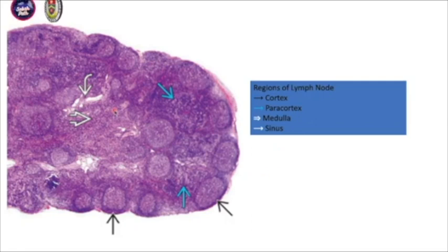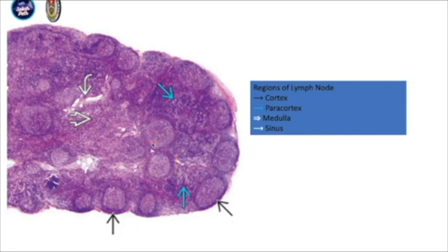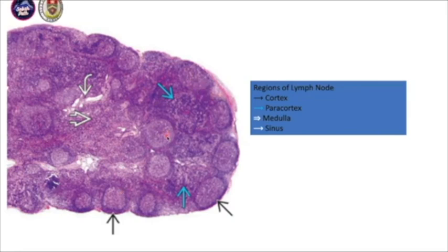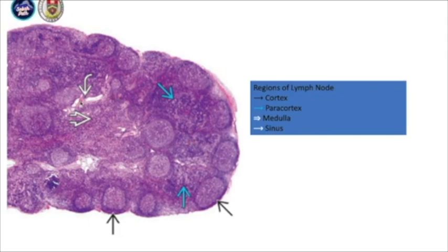This is how a benign lymph node looks like at low magnification. You can see there are lymphoid follicles with a prominent germinal center rimmed by a well-defined mantle zone. This is the cortex region. In between the cortex, the lymphoid follicles and mantle zone, you have the paracortex region, which is composed of T lymphocytes and plasma cells. Then you have the sinuses and the medullary region.